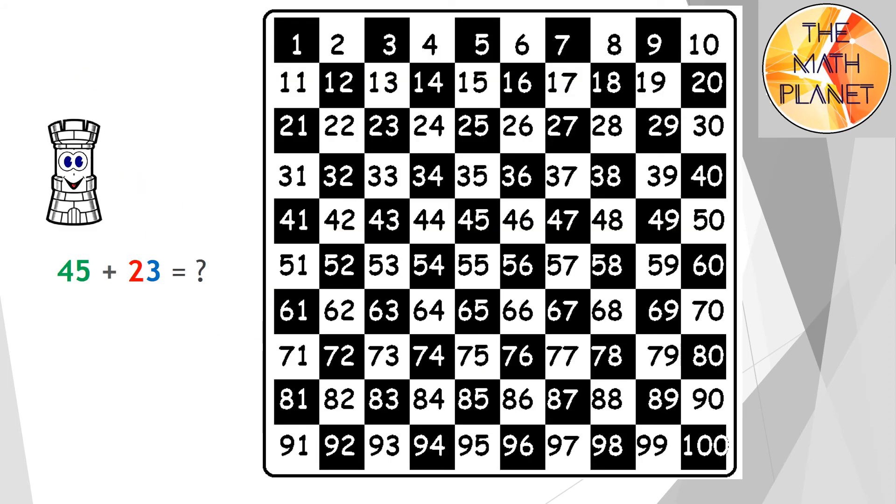So let's apply it on the hundred chart. The start point is 45, so I'll jump to 45. Then I'm going to move two steps down and three steps to the right to add 23. One, two steps down the chart.